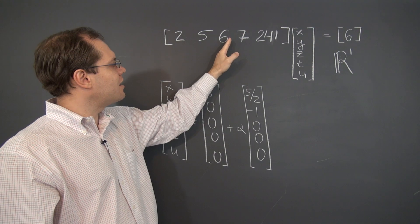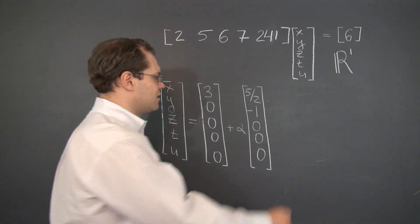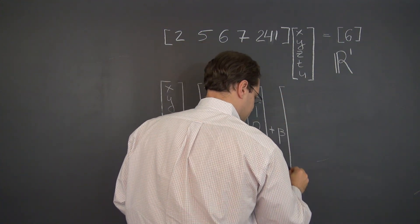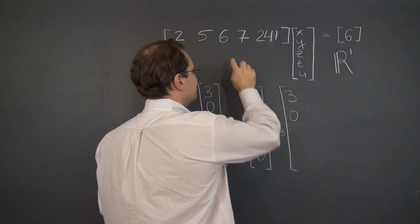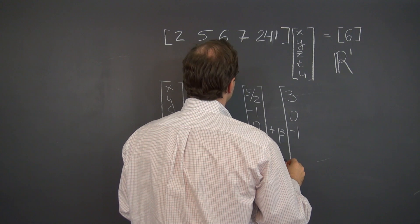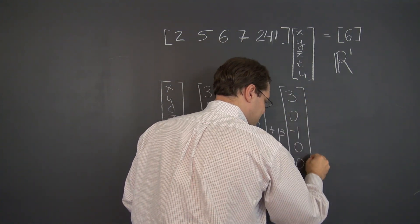Now the third column is three times the first column. So plus beta, three of the first, none of the second, that produces the third. So subtracting the third, not using the fourth or the fifth, gives us the second element. How are we doing on space? We're running out of space, but maybe we'll just make it.